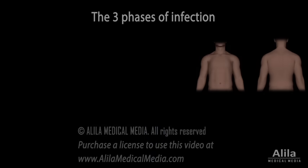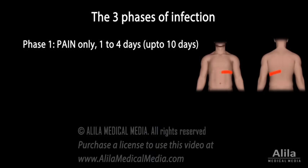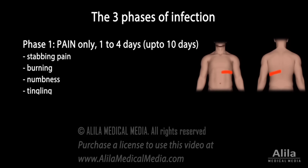Shingles develops in three phases. Patients typically experience pain as the first symptom. The pain can be described as a stabbing pain or a burning, numbness, or tingling sensation. The area is sensitive to touch. Depending on the location, the pain can sometimes be mistaken for a lung, heart, or kidney problem.